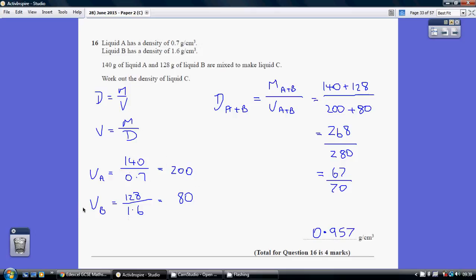200. And our volume of liquid B is the mass of 128 divided by the density of 1.6. So we've worked out our two volumes.